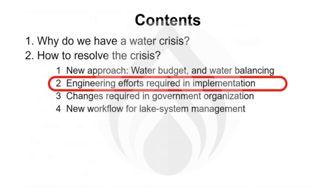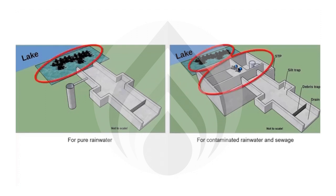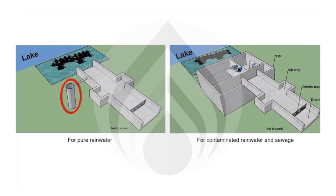Next, we will examine the engineering efforts required in implementing the solution. There are four major engineering challenges: first, to provide totally separate pipelines for rainwater and raw or treated sewage; second, to set up a large number of STPs and constructed wetlands required for water treatment; third, to sink one million rainwater harvesting wells across the city; and fourth, setting up local water supply systems that recycle water in each watershed.